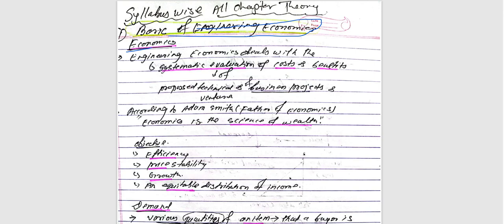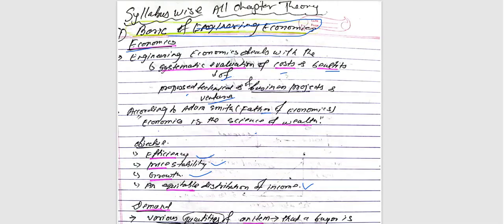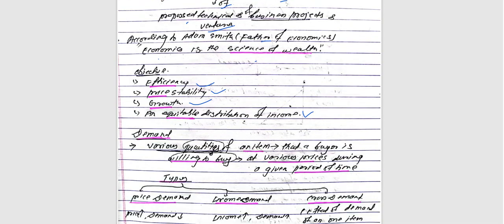Engineering economics deals with the systematic evaluation of the cost and benefit. It's a systematic evaluation of proposed technical and business projects and ventures. According to Adam Smith, the author of economics, economics is the science of wealth. The main objectives of economics are efficiency, price stability, growth, and equitable distribution of income.